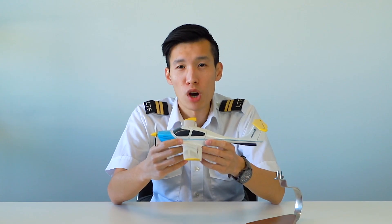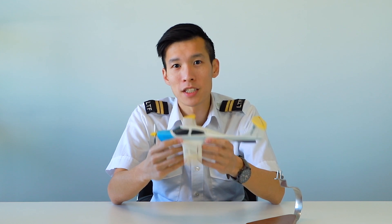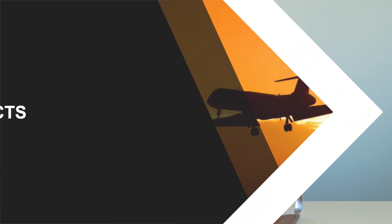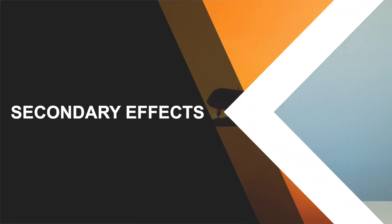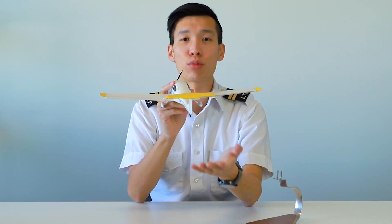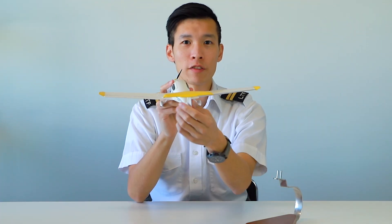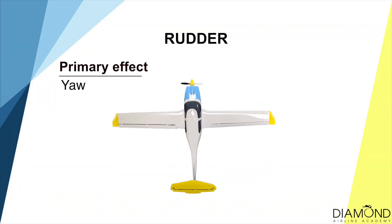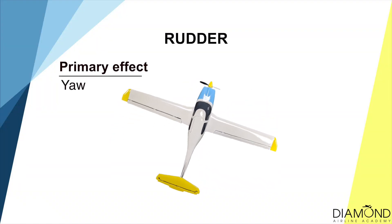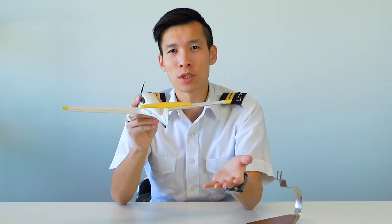So what we've been discussing is the primary effect of the controls. Now let's get onto the secondary effects. Let's talk about the rudder first. The primary effect of the rudder is yaw. What about the secondary effect? Let's have a look at the forces experienced by the plane when it's yawing.